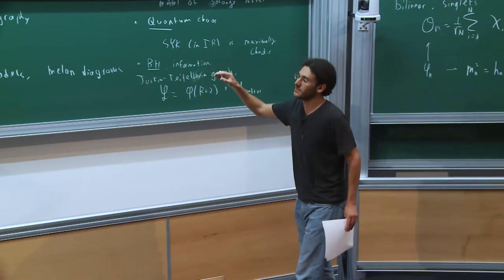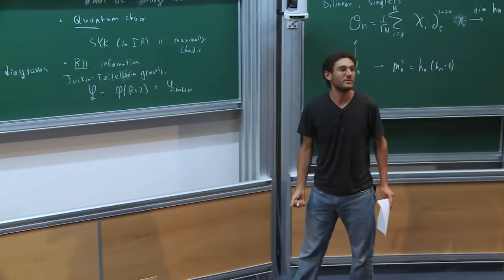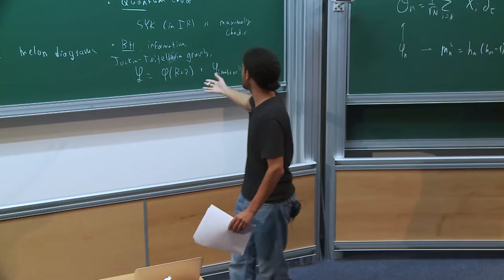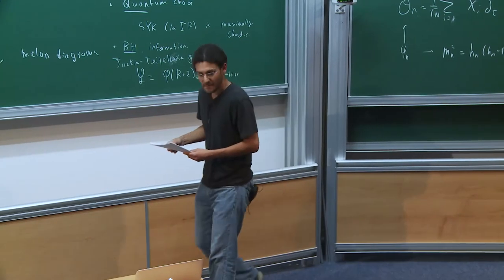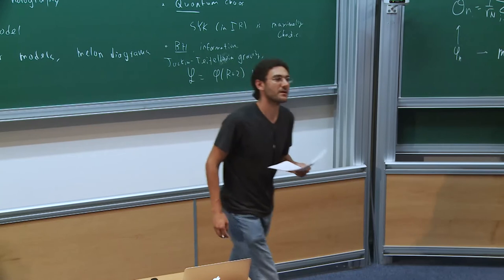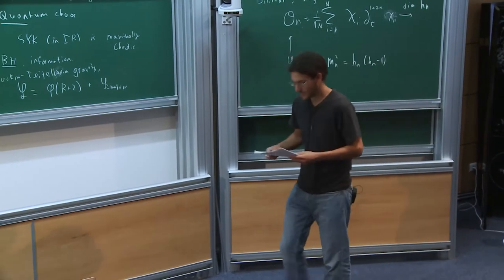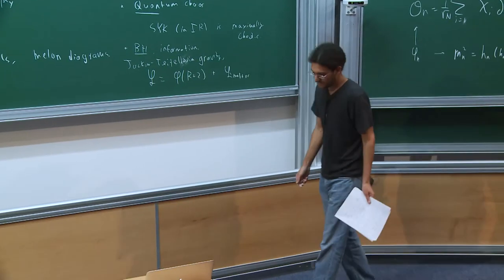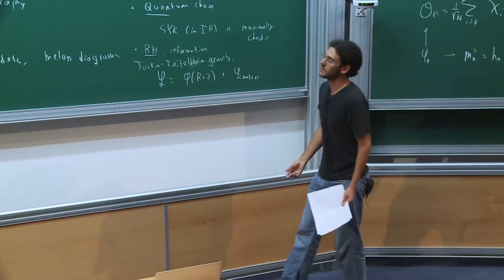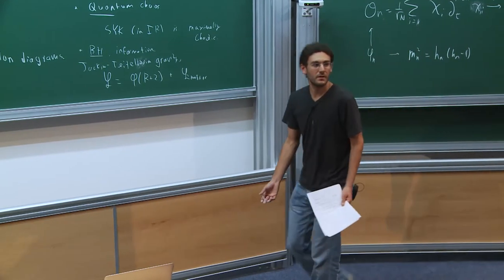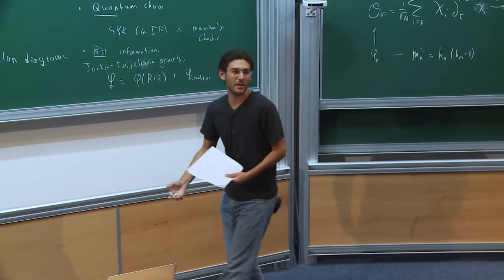SYK is only nearly CFT₁, consistent with the statement that this is not quite ADS₂ — there's one operator in the spectrum that breaks conformal invariance in the infrared, due to reparameterization invariance, and this is related to the fact that there's dilaton gravity. Another feature of SYK is that there is a large ground-state entropy at infinite N, which looks analogous to extremal black holes having entropy. That's the end of part one.